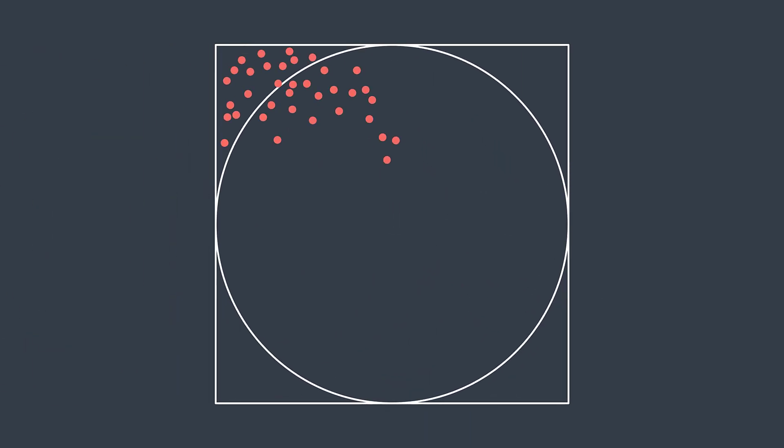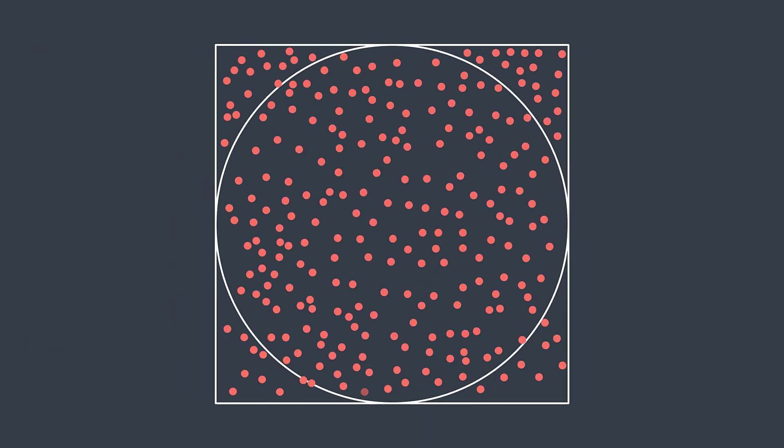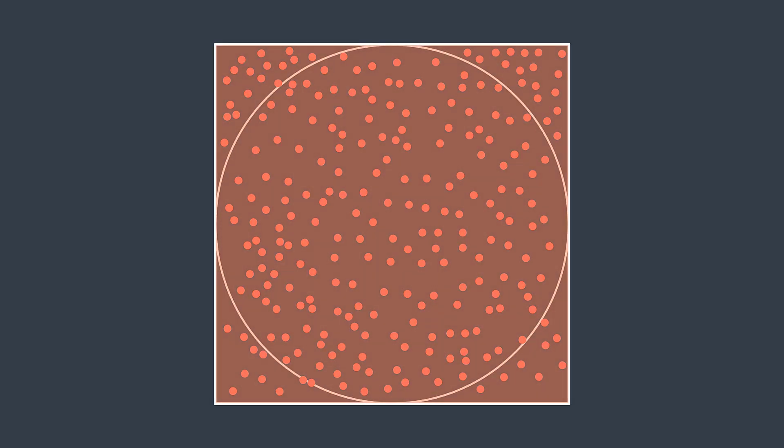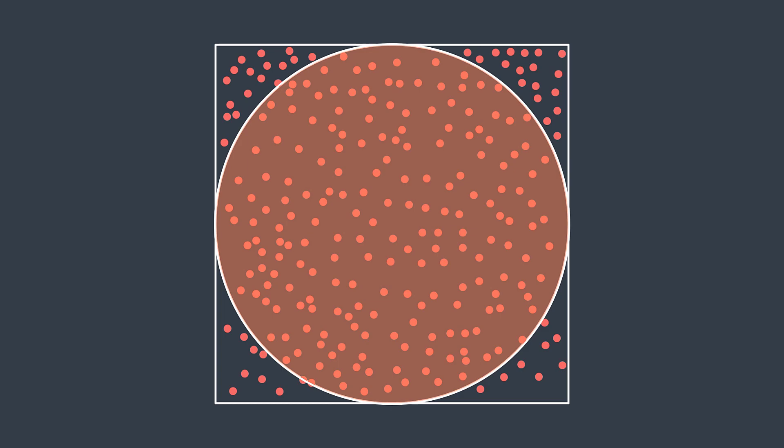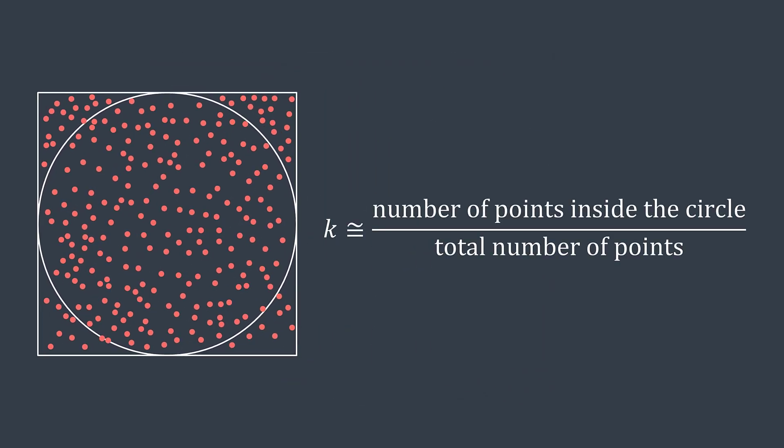We can just generate a bunch of points in our square. All points are inside the square, so they all constitute the area of the square, but only those inside the circle constitute the area of the circle. So what we can do to calculate the ratio is to divide the number of points inside the circle by the total number of points.